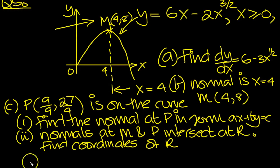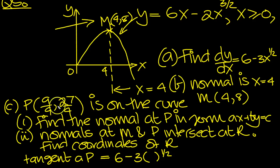So the normal at P, the tangent at P then, is equal to, well the gradient is here, 6 minus 3 root x, and the x value at P is 9 over 4. So this is equal to 6 minus, 9 over 4 square root is 3 over 2, so you've got minus 9 over 2.